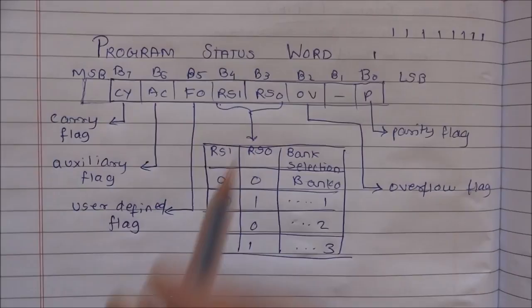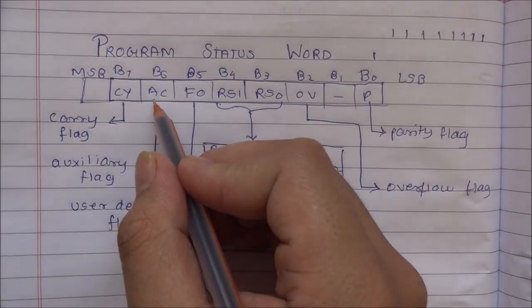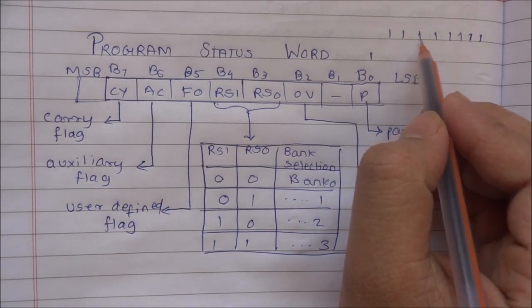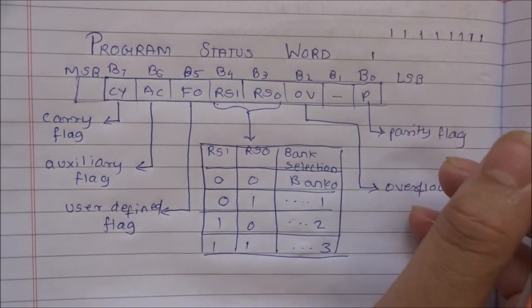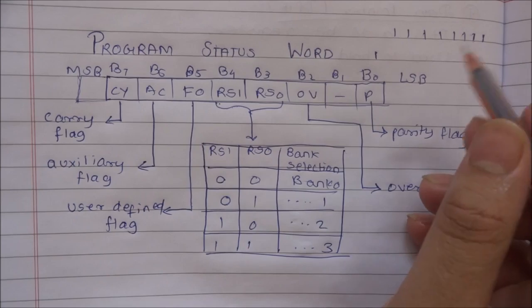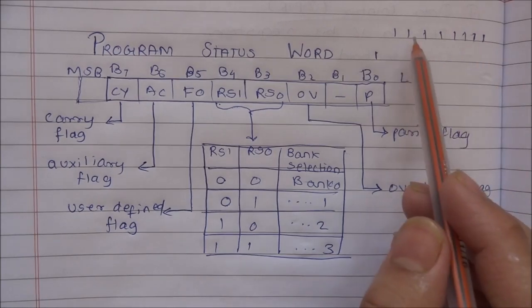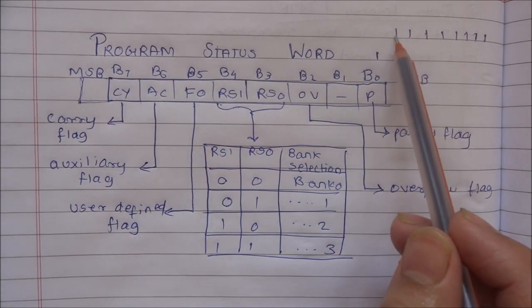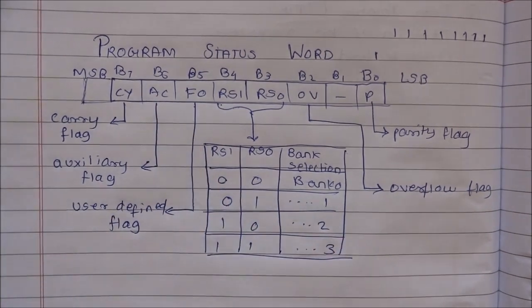The auxiliary carry flag is set when there is a carry out of the lower nibble to the higher nibble, or a borrow from the higher nibble to the lower nibble. A carry is generated during addition and a borrow during subtraction. Whenever a carry is generated from the lower nibble to the higher nibble, the auxiliary carry flag will be set. When there is a borrow from the higher nibble to the lower nibble, the auxiliary carry flag will also be set.